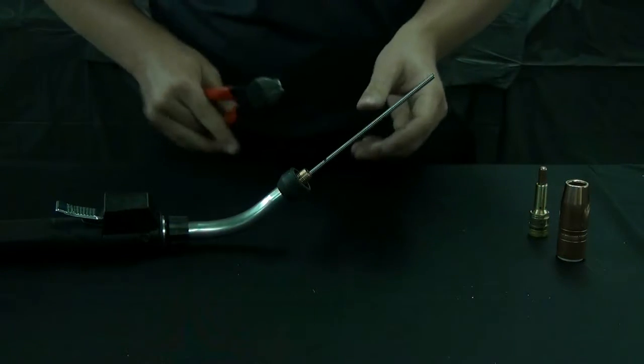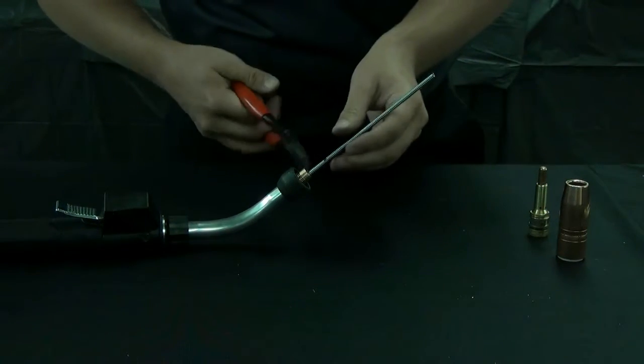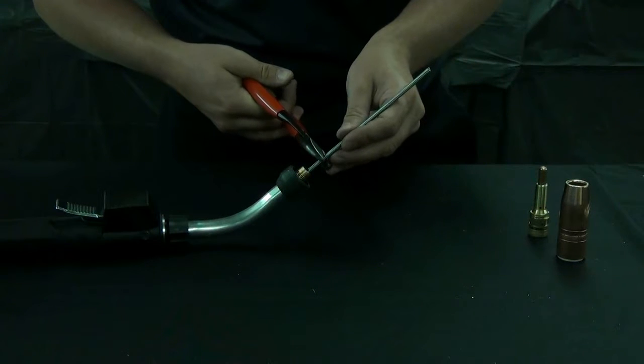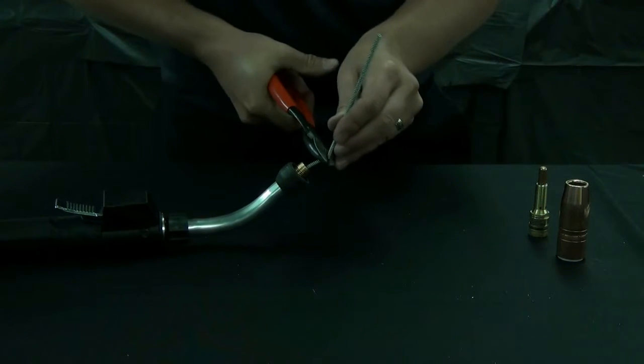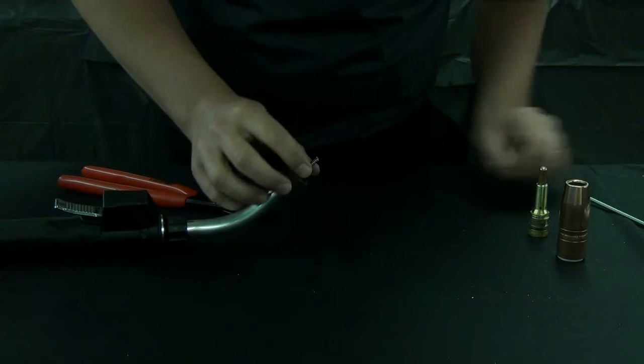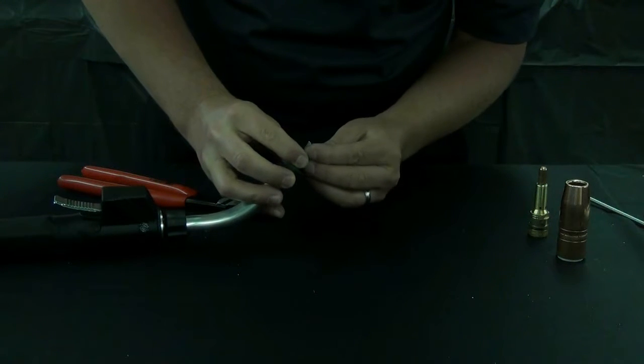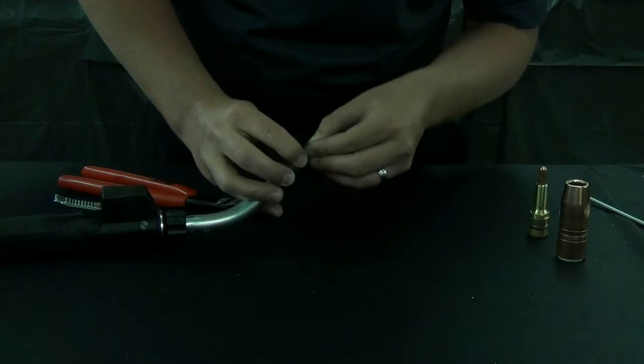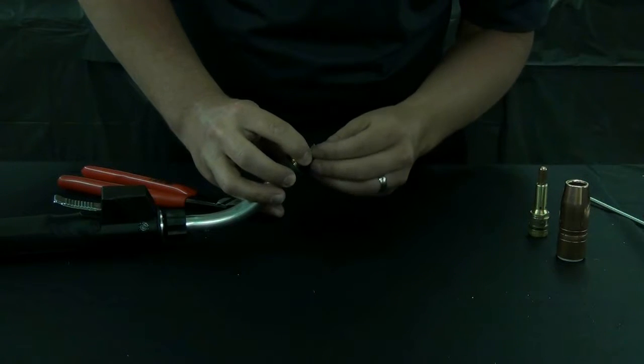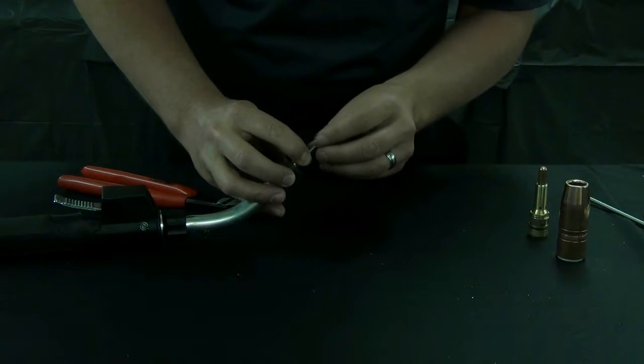Using a good pair of side cutters, cut that three quarters of an inch mark. When cutting this, ensure that there's no burr that could obstruct the path of the wire.